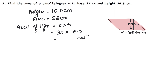Now let's multiply: 32 × 16.5. Working through the multiplication: 5 × 3 = 15, 5 × 2 = 10, and continuing — 16 × 3 = 48, plus carry 4 is 52. So the area of the parallelogram is 528 cm². Let's do the next question.